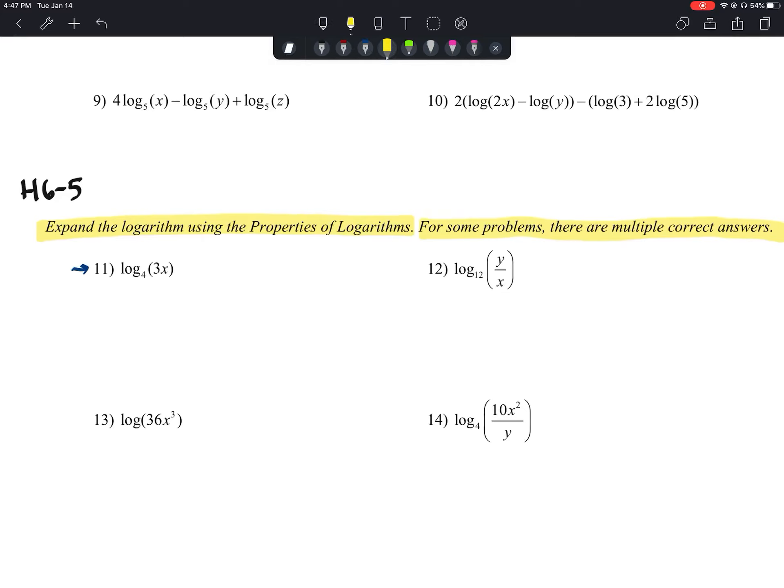What we need to look at here is we have 3 times x. We're multiplying 3 times x. So we're going to be using our product property of logarithms going the other direction. This means this is the same thing as saying log base 4 of 3 plus log base 4 of x.